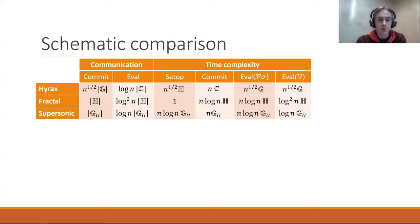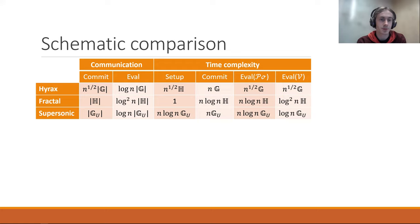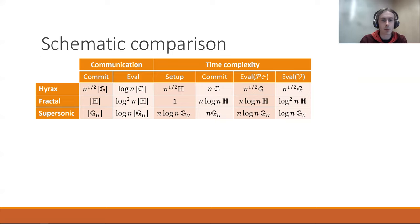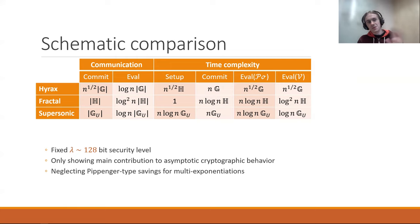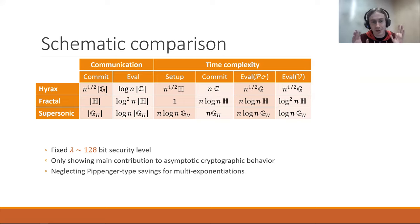Hyrax is pretty efficient for the prover to evaluate, but the commitment size and evaluation proof are relatively large. For Fractal, across the board things look pretty good, but the amount of communication required for an evaluation is larger than ideal, as is the prover's evaluation complexity. For Supersonic, naively both setup and evaluation take longer than would be ideal. These are very schematic comparisons, so we really want to understand this concretely. If we fix a concrete security level and get concrete numbers from benchmarking, we can attach real figures to this.